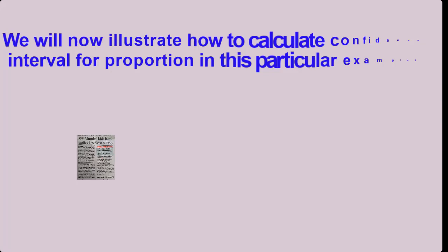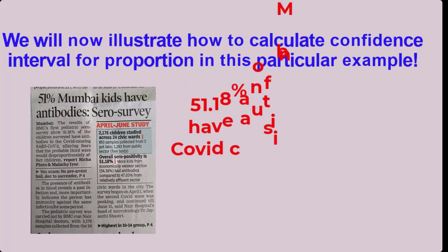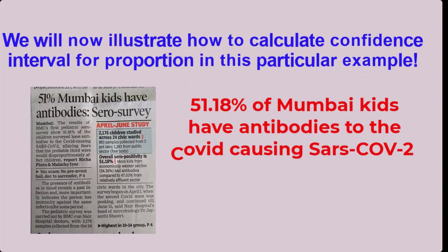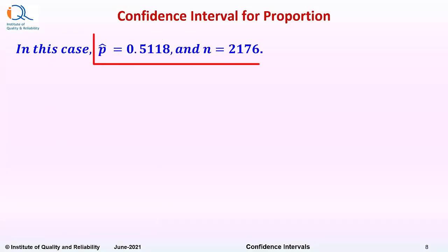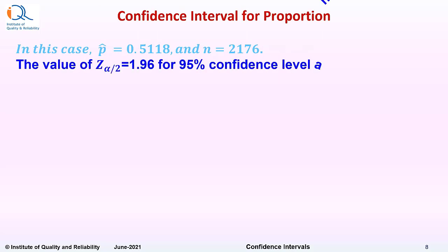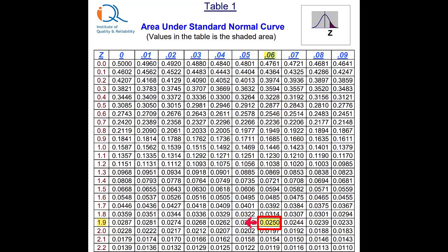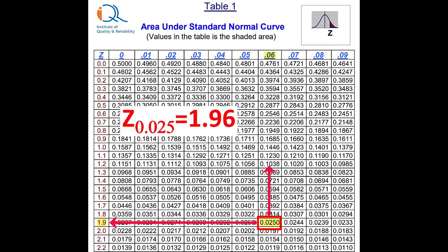We will now illustrate how to calculate confidence interval for proportion in this particular example. The proportion is given as 0.5118 with sample size of 2176. The value of z alpha by 2 is equal to 1.96 for 95% confidence level and alpha risk of 5% distributed on both tails. We have already illustrated how to estimate this value of z alpha by 2 in our previous video on confidence interval part 1.